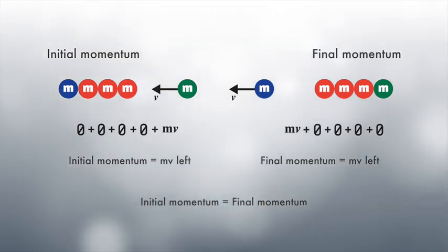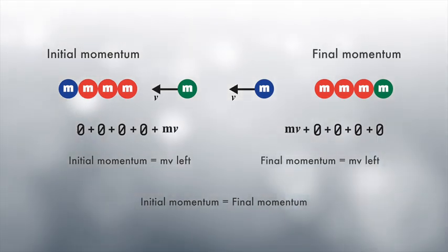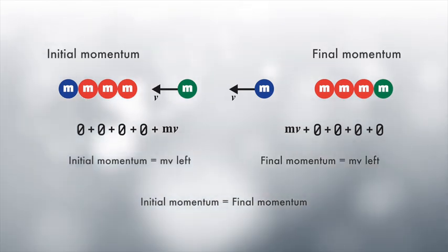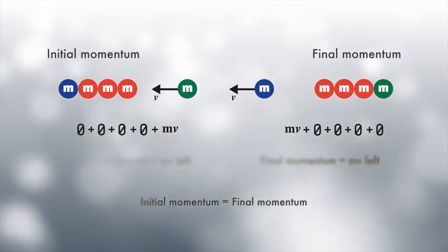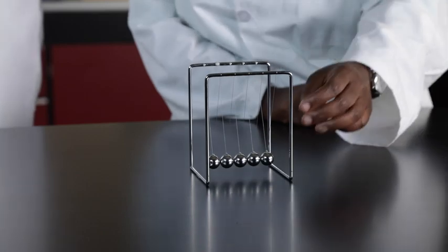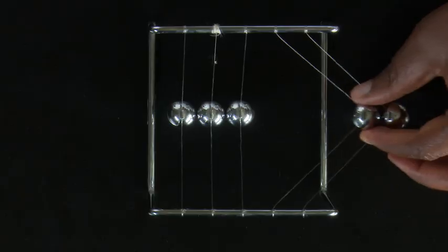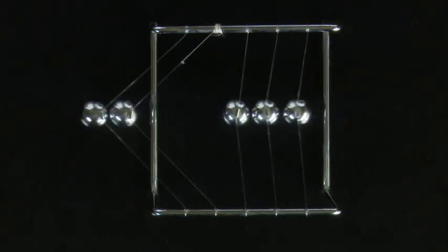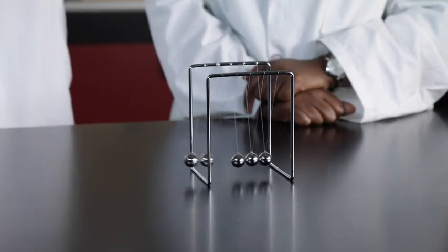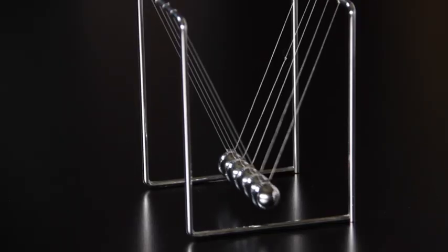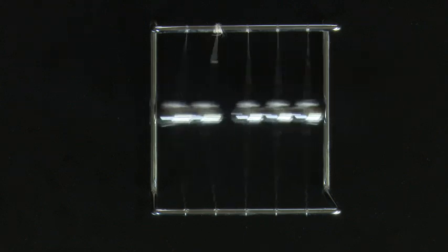The principle of conservation of momentum applies to Newton's Cradle because it is an isolated system. No external forces act on the system during the collisions. What is even more amazing is this: when we let two balls collide with the other three, the two balls swing up on the other side, and it's the principle of conservation of linear momentum that holds true.